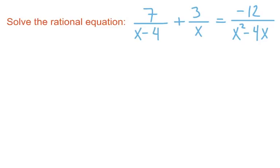Okay, this will be an example of solving a rational equation. We'll walk through the entire process here. We have 7 over x minus 4 being added with 3 over x, equaling negative 12 over x squared minus 4x.